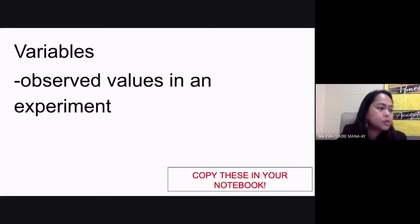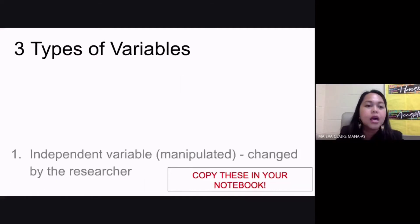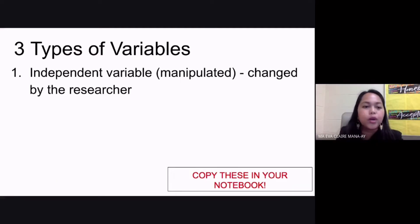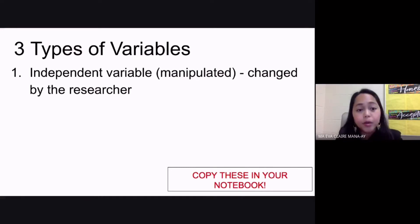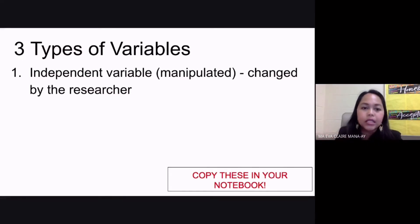Whenever you have an experiment, you always have several variables. Variables are the changeable values in your experiment. We have three different types of variables. The first one is your independent variable, also called the manipulated variable. This is the type of variable that you change in your experiment — changed by the researcher, the scientist, or whoever is conducting the experiment.